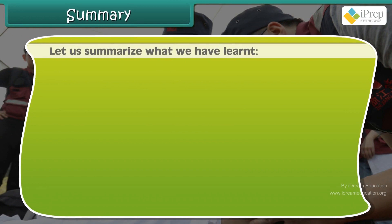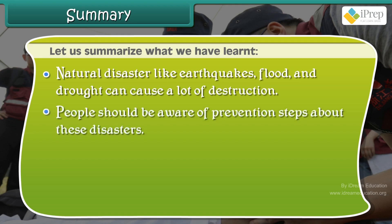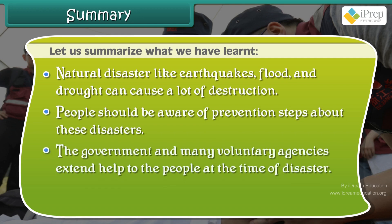Let us summarize what we have learned. Natural disasters like earthquakes, flood, and drought can cause a lot of destruction. People should be aware of prevention steps about these disasters. The government and many voluntary agencies extend help to the people at the time of disaster.